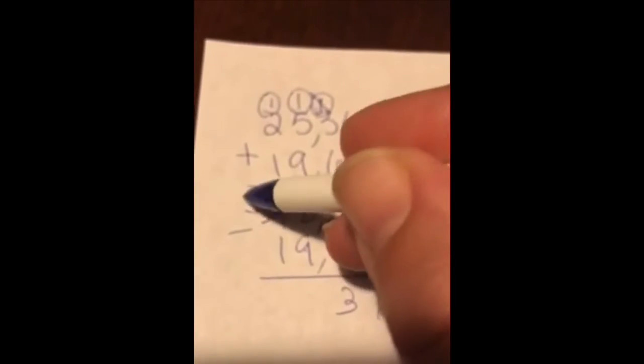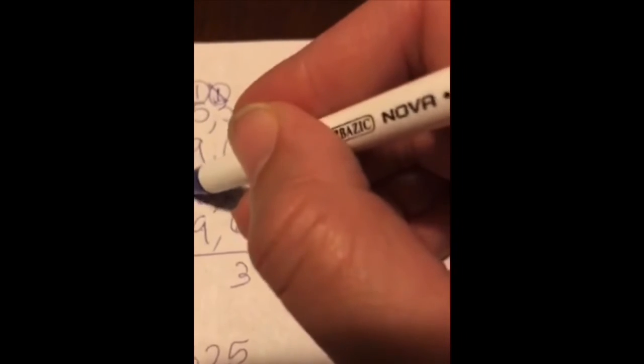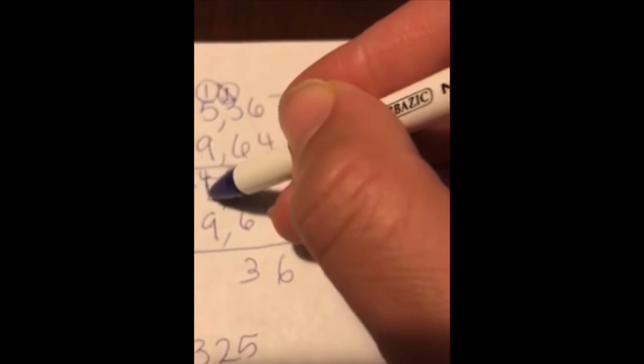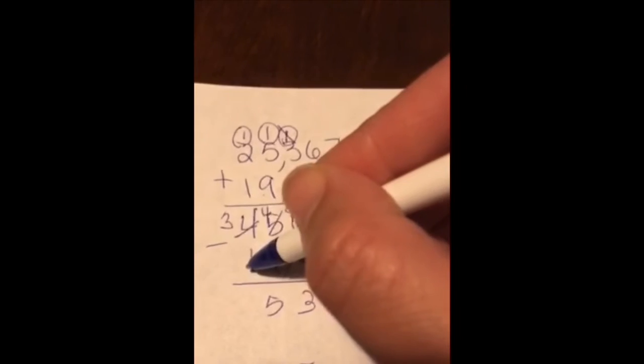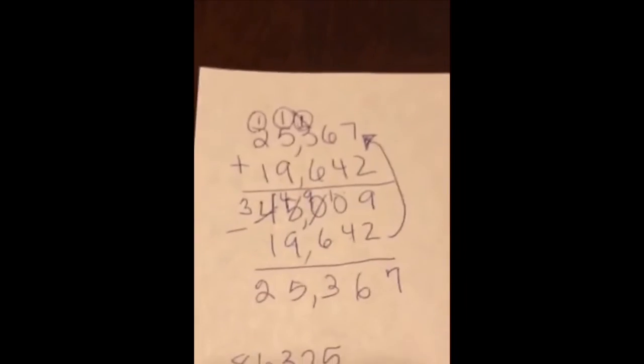My forty thousand becomes thirty thousand. I add ten thousand here, so fourteen minus nine is five, and three minus one is two. And I have my original answer of 25,367. It matches the top number.